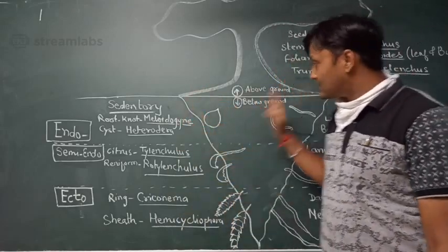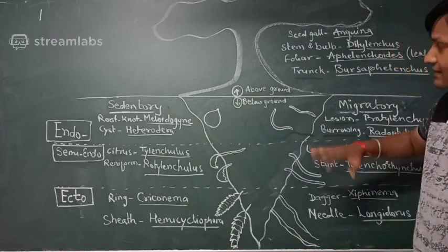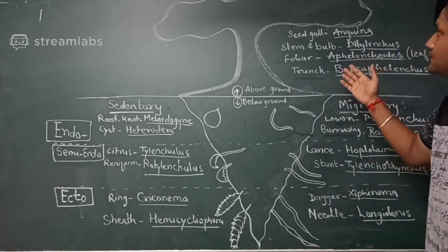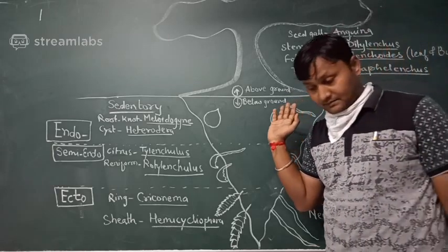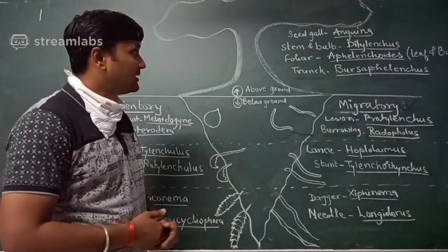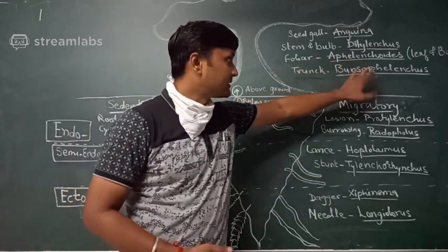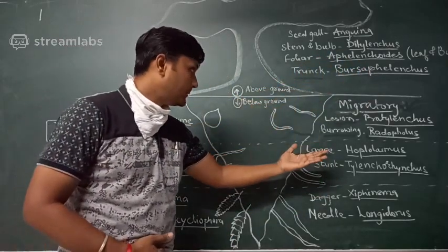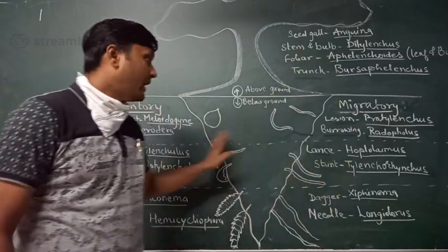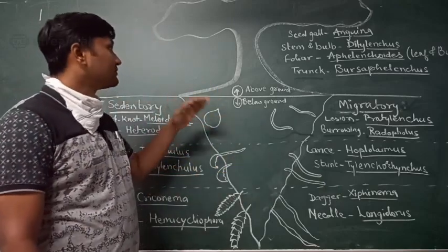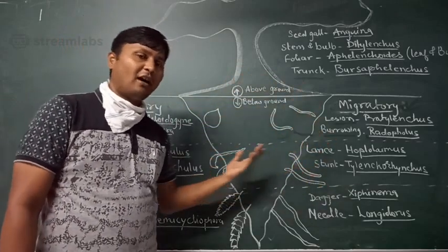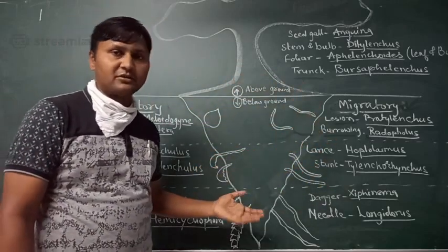These examples cover the above ground and below ground feeder nematodes, which is a very important chapter in your course. Examiners frequently ask about these classifications, including common names, scientific names, type of parasitism, and feeding habits. Long-answer questions on the classification of plant parasitic nematodes according to feeding habit are also common. Thank you.